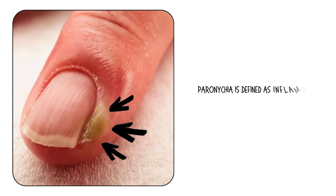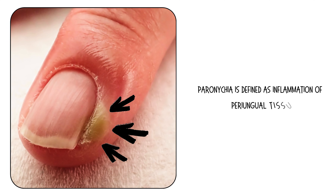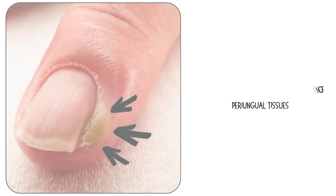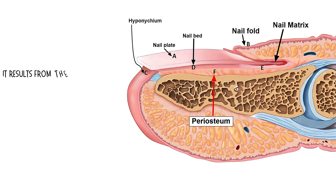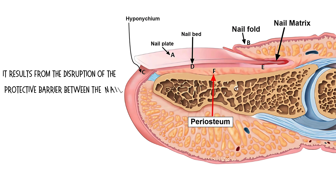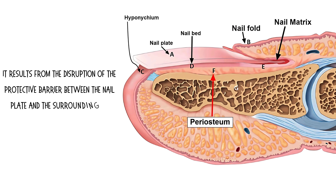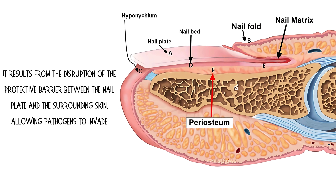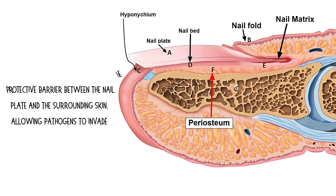Paronychia is defined as inflammation of periungual tissues. It results from the disruption of the protective barrier between the nail plate and the surrounding skin, allowing pathogens to invade.